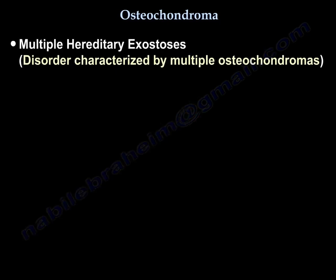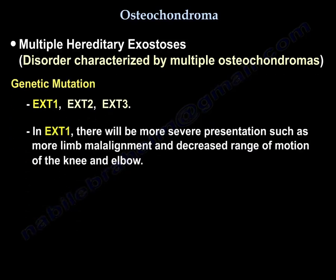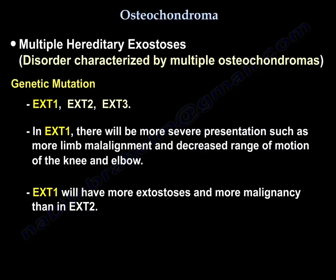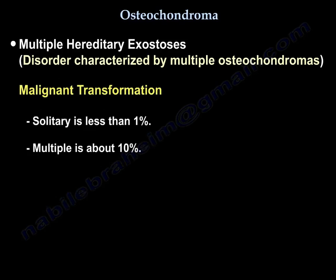Multiple Hereditary Exostosis (MHE): lesions are similar in X-ray appearance and histologically to solitary osteochondroma, with metaphyseal widening and sessile lesions. Inheritance is autosomal dominant with incomplete penetrance in females, making it more common in males. Genetic mutations include EXT1, EXT2, and EXT3. EXT1 presents more severely with limb malalignment and decreased range of motion of the knee and elbow, more exostoses, and more malignancy than EXT2. Malignant transformation rate: less than 1% for solitary, about 10% for multiple.